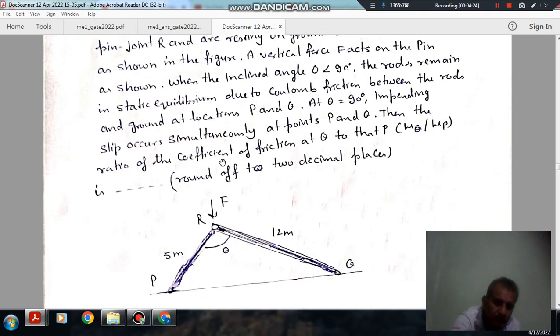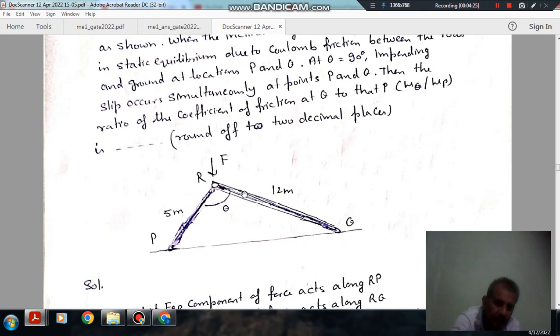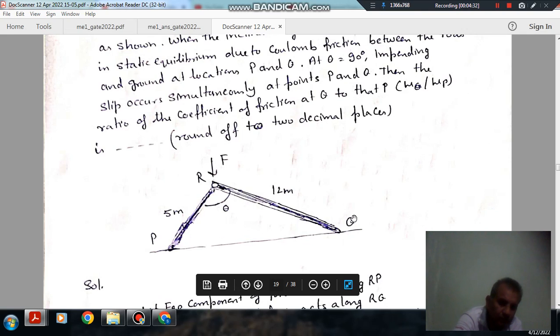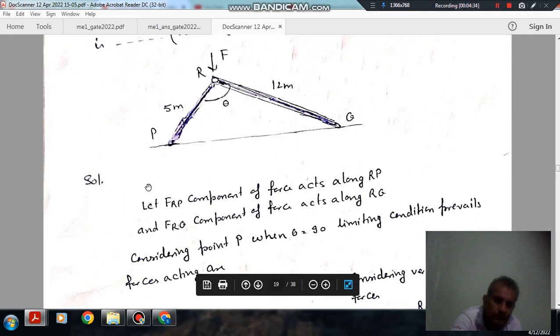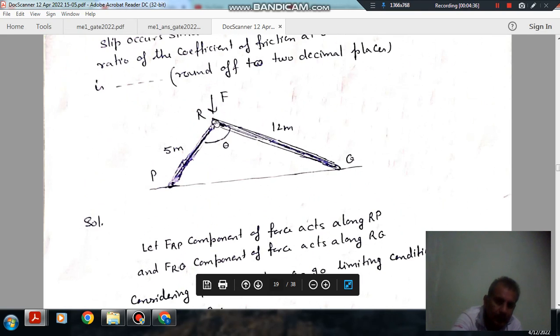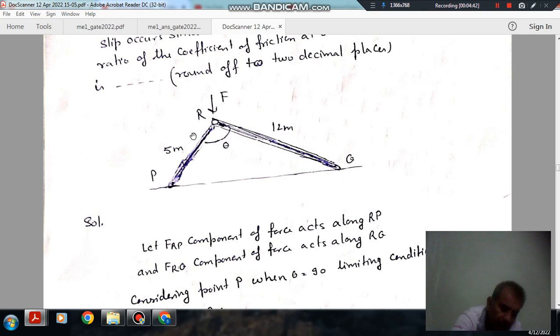So this is angle theta. This is F, this is point P, this is 2, this is 5 meters, this is 12 meters. Let F_RP be the component of this force along member RP, and F_RQ be the component of force along member RQ.